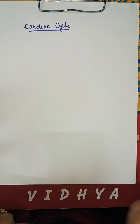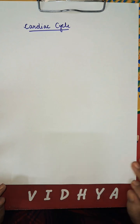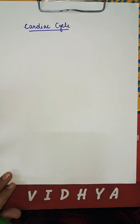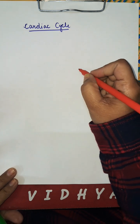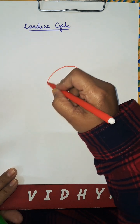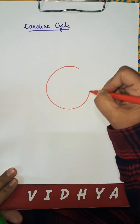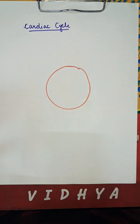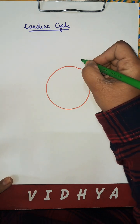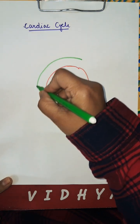Hi, today I am going to tell you a very easy way to learn a cardiac cycle. So make two circles — one and two.